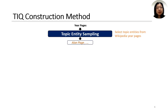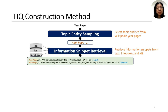The construction method starts with selecting notable events or entities from Wikipedia year pages as a pool, and then sampling topic entities from this pool. In the second stage, retrieve temporal snippets for each topic entity from Wikipedia text, infoboxes, and Wikidata.